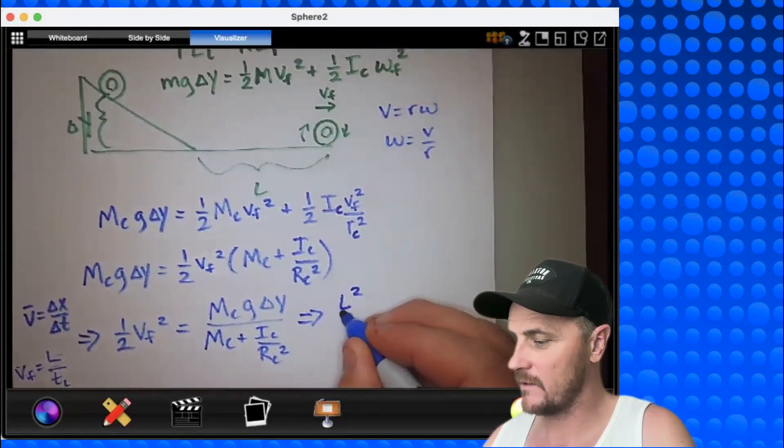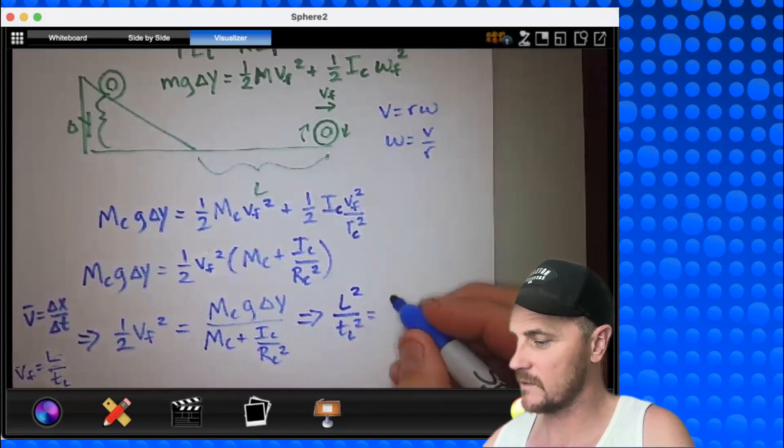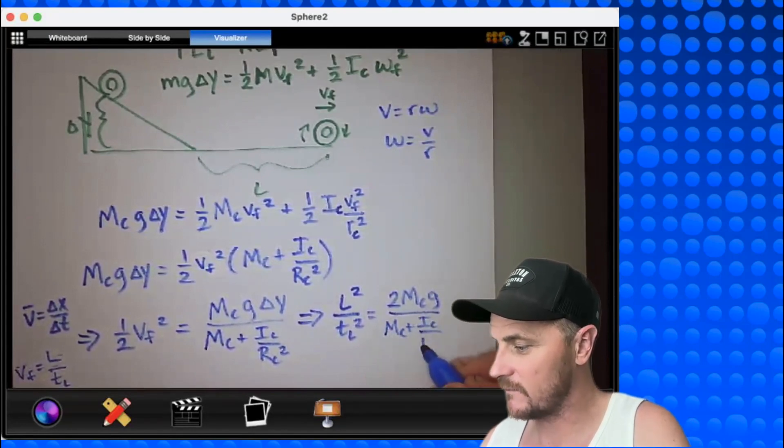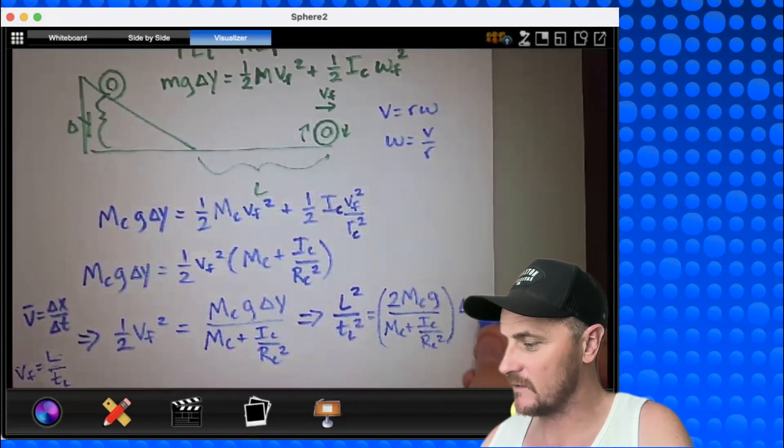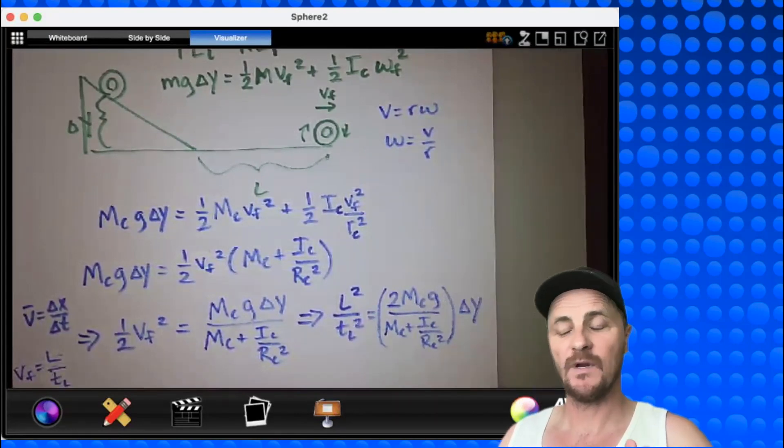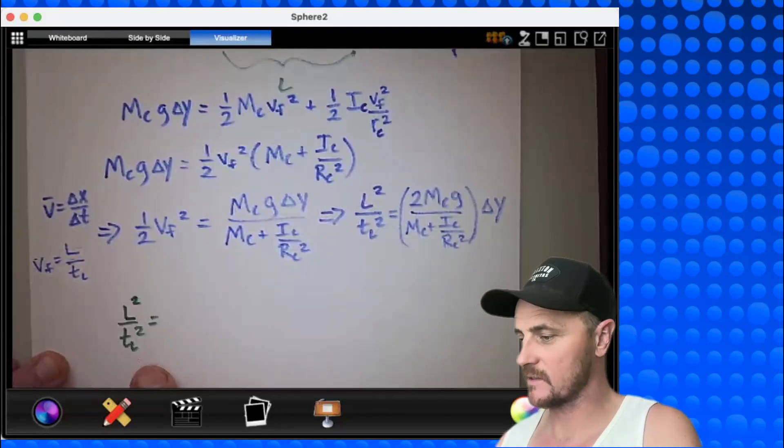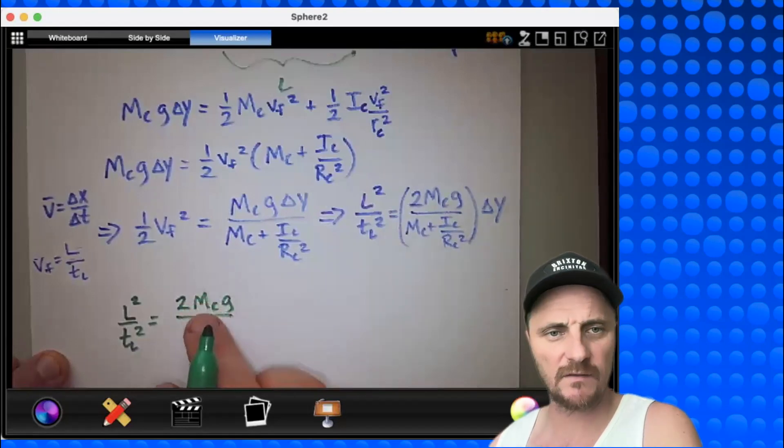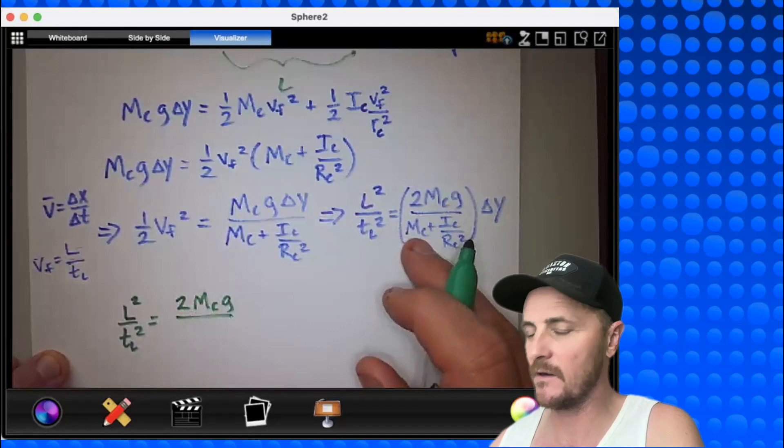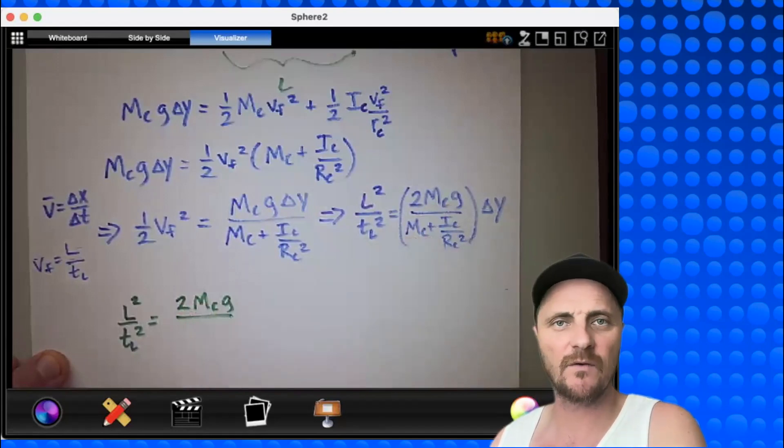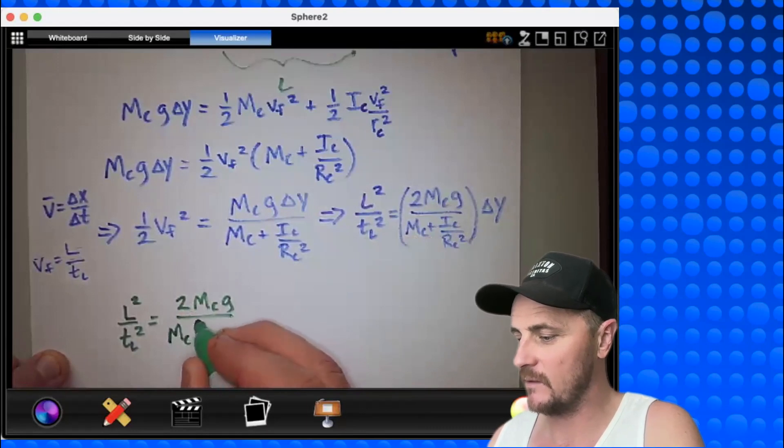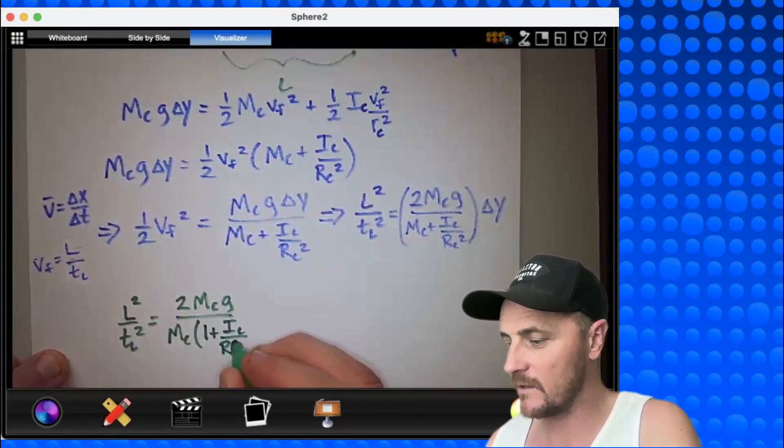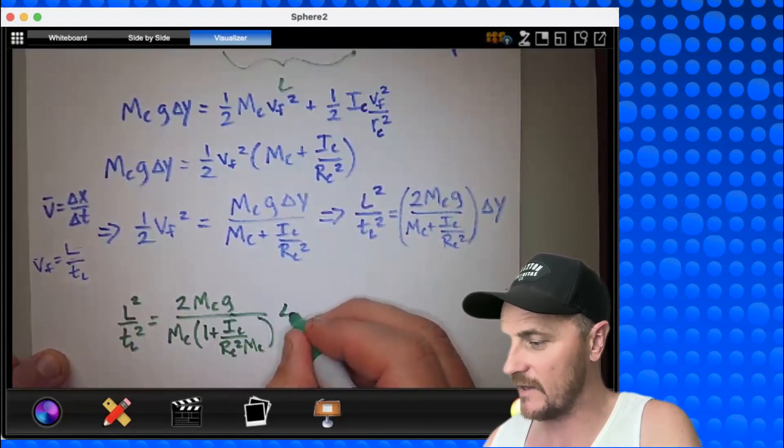Okay, so we'll get this. L squared over tl squared equals two mc g all over mc plus i sub c over rc squared. This thing right here times delta y. Alright, a couple more alterations and I think we've got our final equation. L squared over tl squared would be equal to two mc g over... I want to cross out this mc and there's a way to do that. I can take the mc down here and factor it out to the front. It's a little bit creative algebraically, but here it goes. We'll take mc out to the front and what would be left in the parentheses? You would have one plus ic over rc squared mc. Close those parentheses. All of that times delta y. And the reason we do this is because these two mc's now cancel out and it looks, believe it or not, a little bit cleaner.